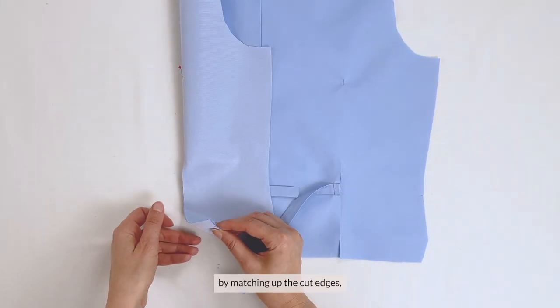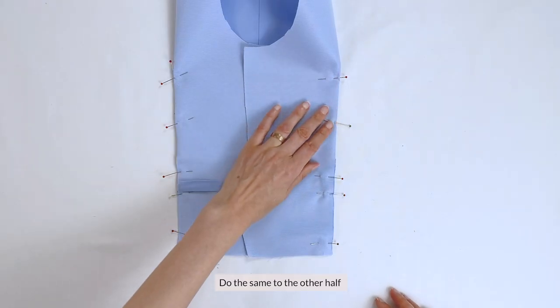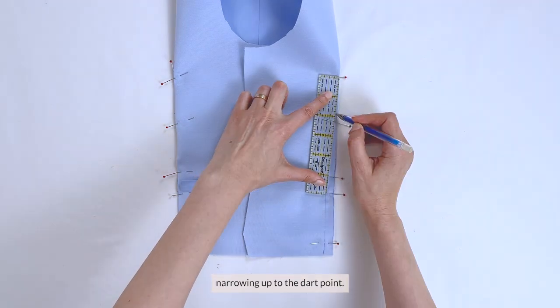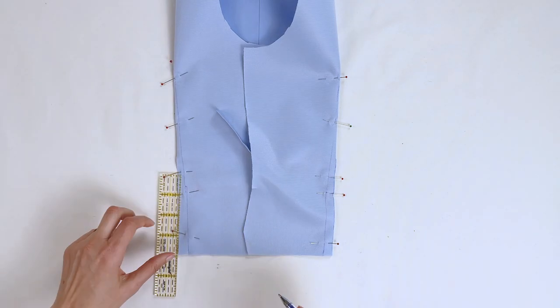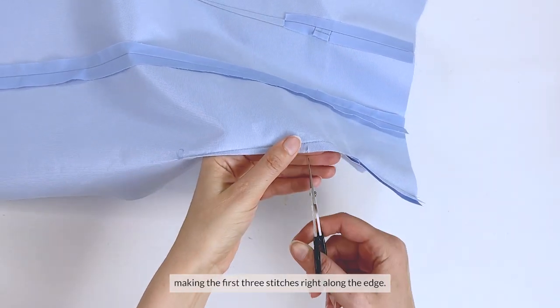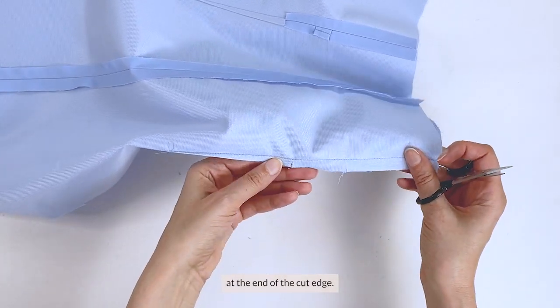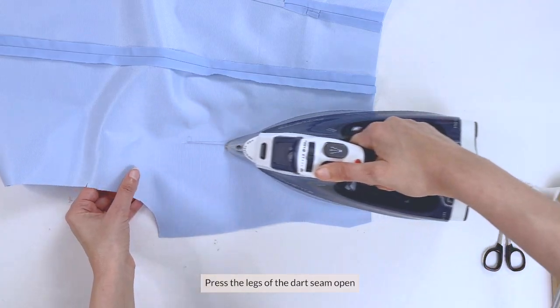Now secure the darts by matching up the cut edges, pinning all the way up to the dart point. The same to the other half, and if needed, draw a guideline with the seam allowances at the bottom, narrowing up to the dart point. Sew the darts, making the first 3 stitches right along the edge. Then clip towards the seam at the end of the cut edge. This is going to help us press this out smoothly.